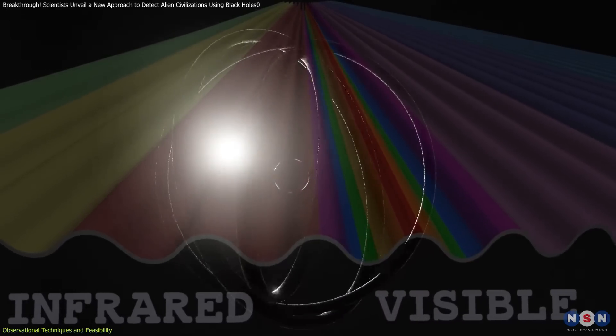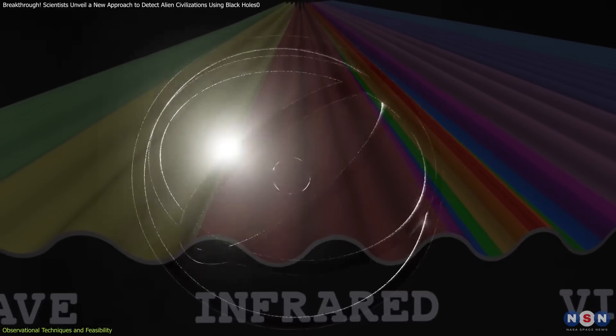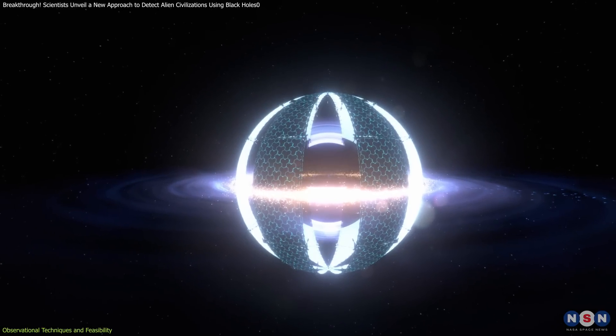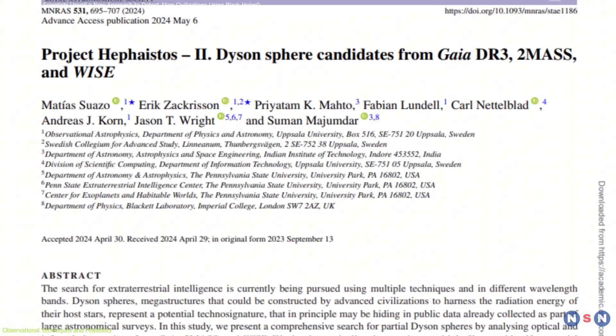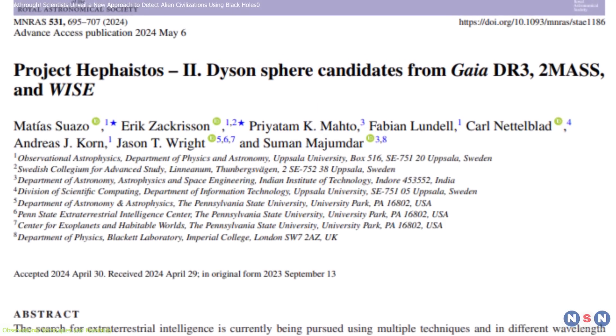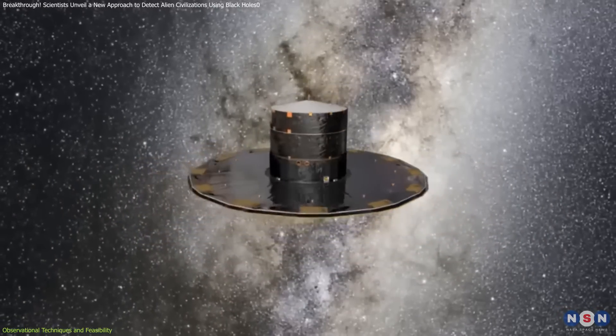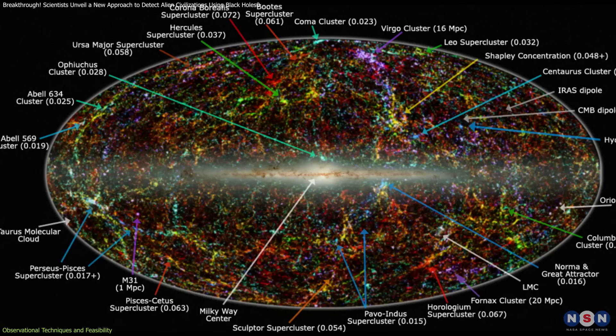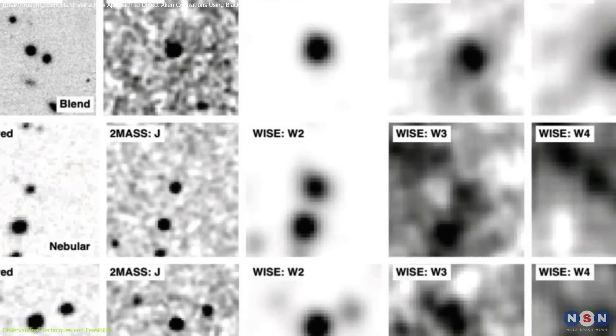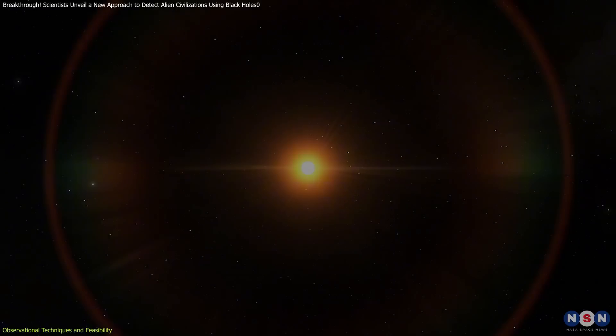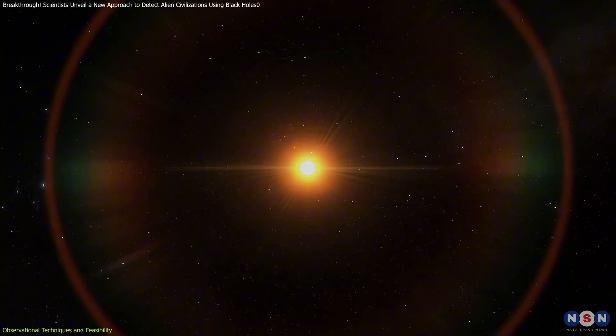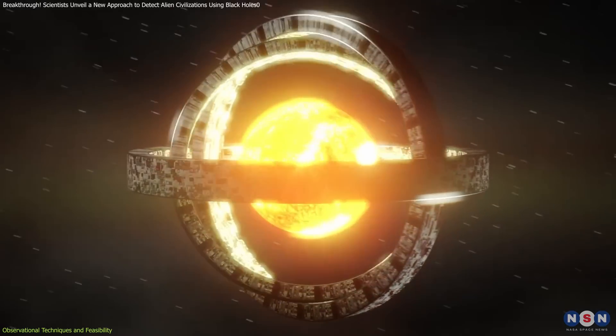For example, an excess of mid-infrared radiation combined with anomalous X-ray emissions might signal the presence of a Dyson sphere. Recent studies have already made progress in identifying potential Dyson sphere candidates. By analyzing data from surveys like Gaia, 2MASS, and WISE, researchers have discovered stars with unusual infrared emissions. These anomalies, mostly associated with M-dwarf stars, suggest the possibility of artificial structures.